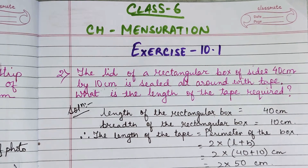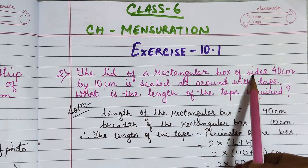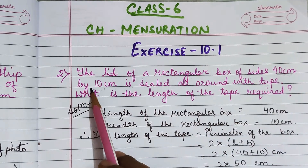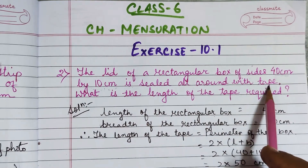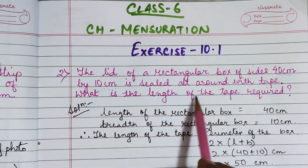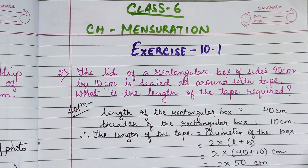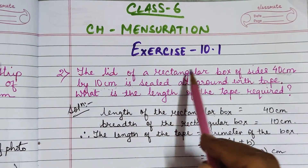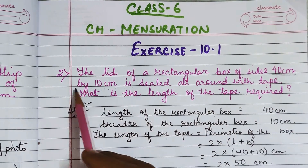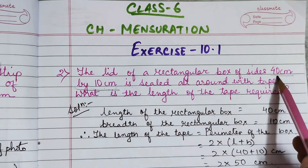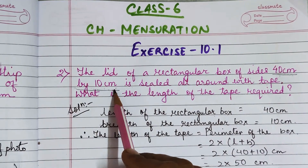In question number 2, we have the lid of a rectangular box of size 40 cm by 10 cm is sealed all around with tape. What is the length of the tape required? Here in this question we have a rectangular box of size 40 cm by 10 cm. It means the length is 40 cm and breadth is 10 cm.